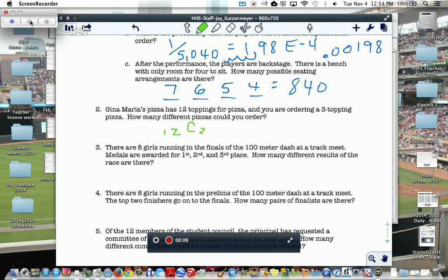So, it's 12C3. If you do a 12C3 in your calculator, 12, you go over to math, you hit the probability, go down to NCR, then put in a 3, you end up with 220 different ways that you can order a pizza.